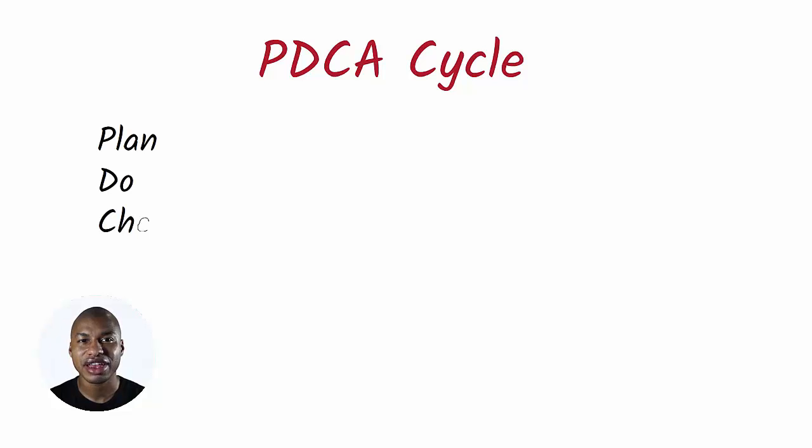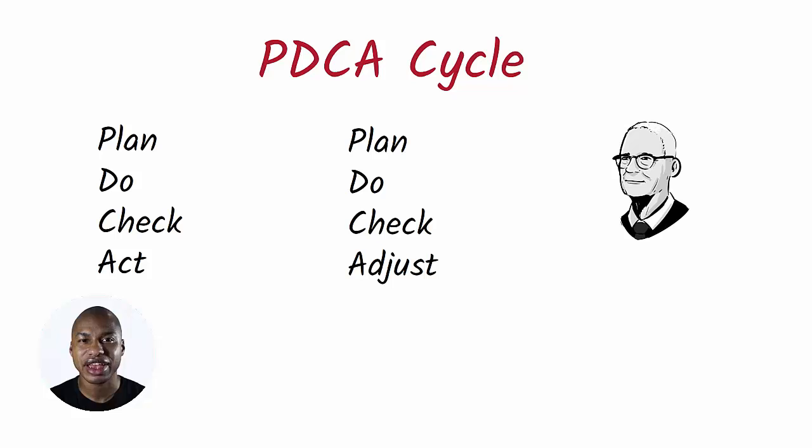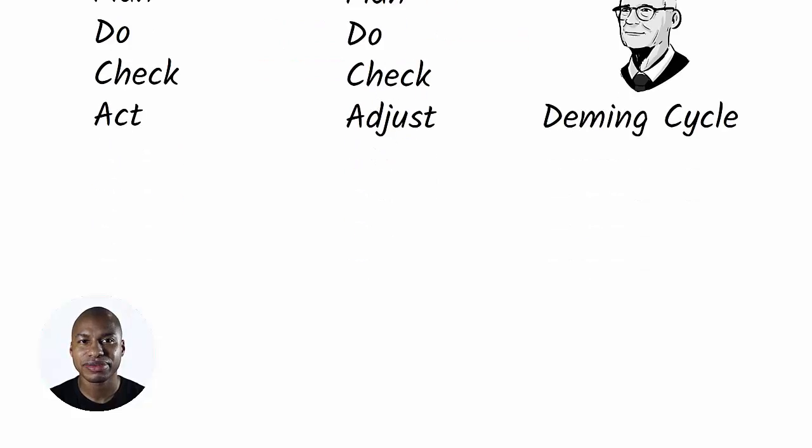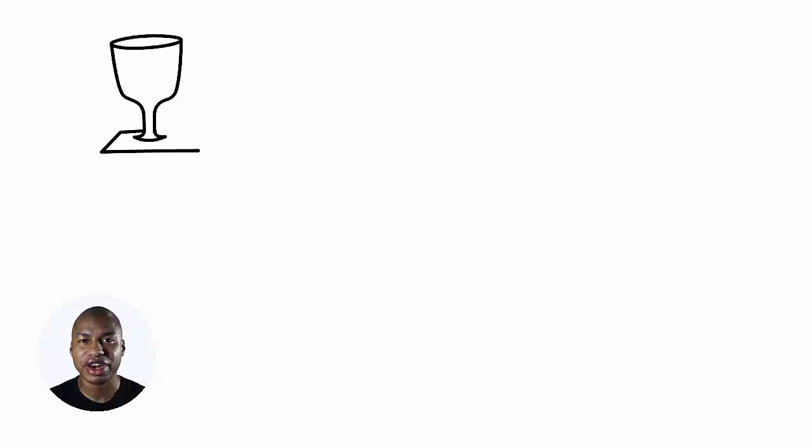The plan-do-check-act cycle is also known as plan-do-check-adjust. This cycle is also called the Deming cycle after William Deming, who was a promoter and popularizer. It is the most used of the improvement cycles.